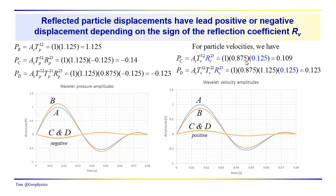For the particle velocities, we have the opposite situation. At points C and D, particle velocity is actually positive, meaning the particles are actually moving downward, producing this decrease in pressure at the leading edge of the wavefront propagating towards the surface. We can see this sign flip graphically in the leading edge of the wavelet as it's reflected back towards the surface. These positive velocities represent velocities along the leading edge of the wavefront that are moving downward.